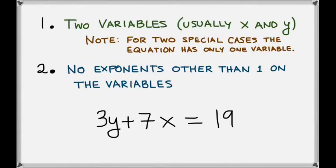First, let's review the two conditions under which an equation is the equation of a line. First of all, it has to have two variables, usually x and y. And remember that in a couple of special cases, the equation actually has one variable, but we'll talk about that later.